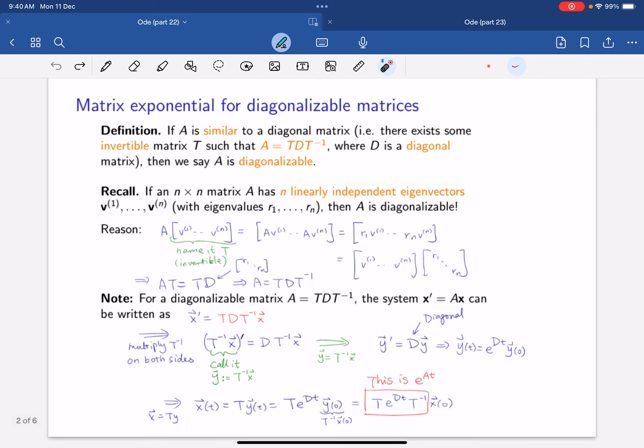And to solve such a system, well, you know that A is TDT inverse, then you just bring this T over, then you call it y, and then solve for y first, then you sub back y as T inverse x, then you times throughout. So you get this.